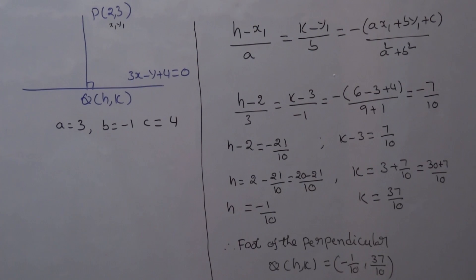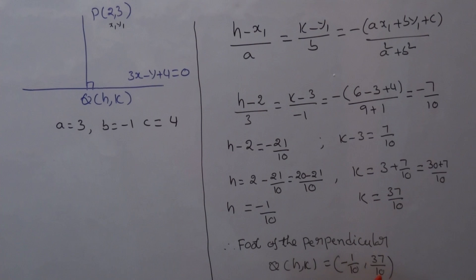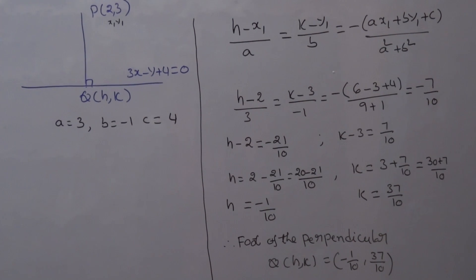So the foot of the perpendicular Q(H, K) is (-1/10, 37/10). Thank you.